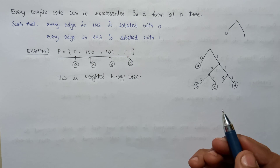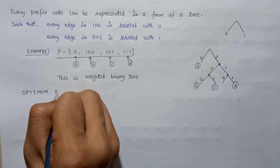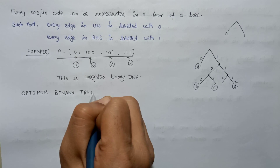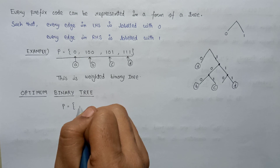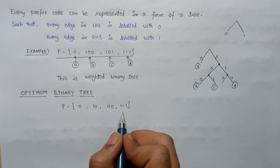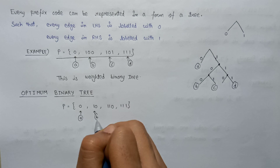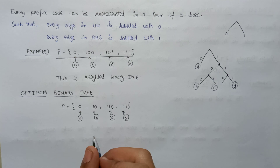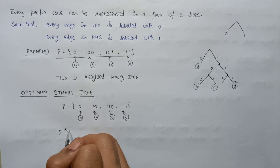Now let's look at the optimal weighted binary tree. Let's consider an example of set P having four code words: 0, 10, 110, and 111. These are the four code words of set P, assigned to variables A, B, C, and D respectively. Now let's make its binary tree. Here is the root node — in the LHS we assign 0 and in the RHS we assign 1.